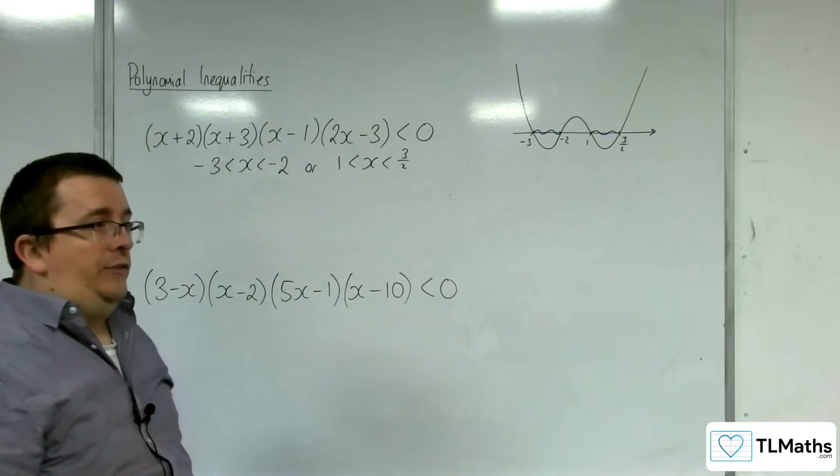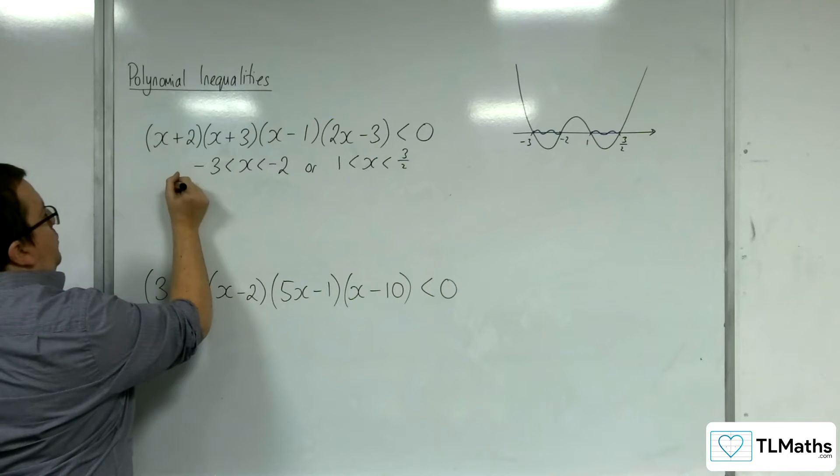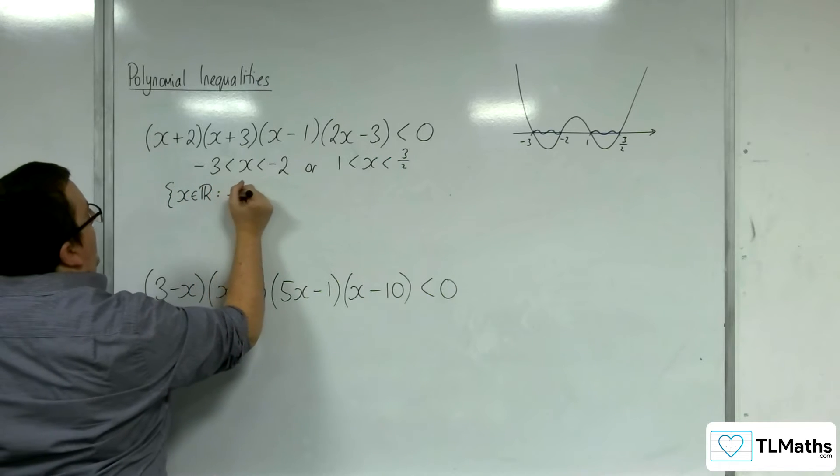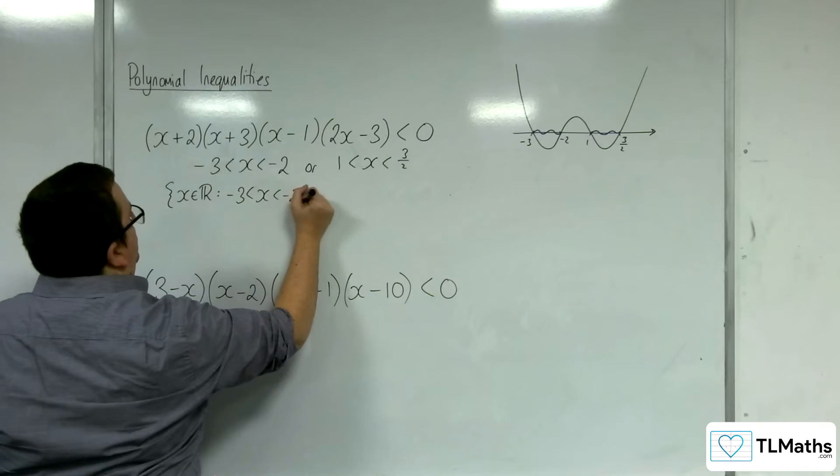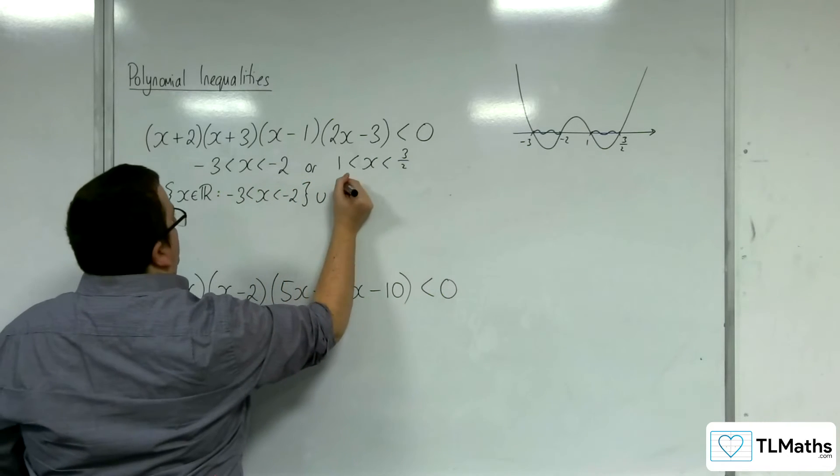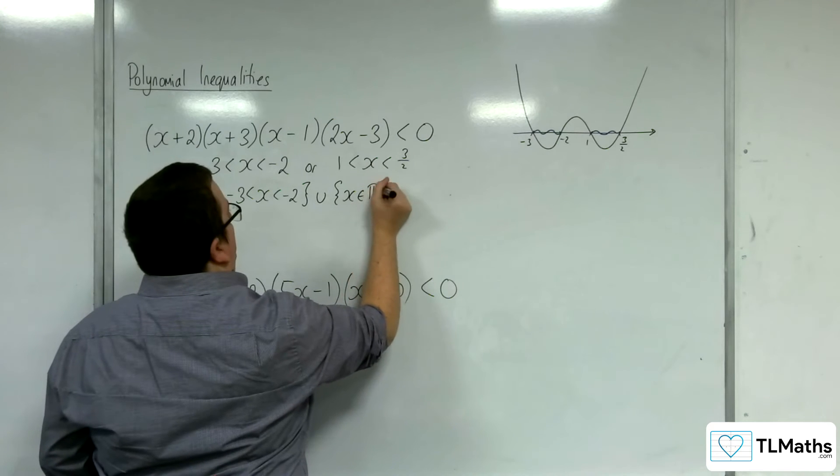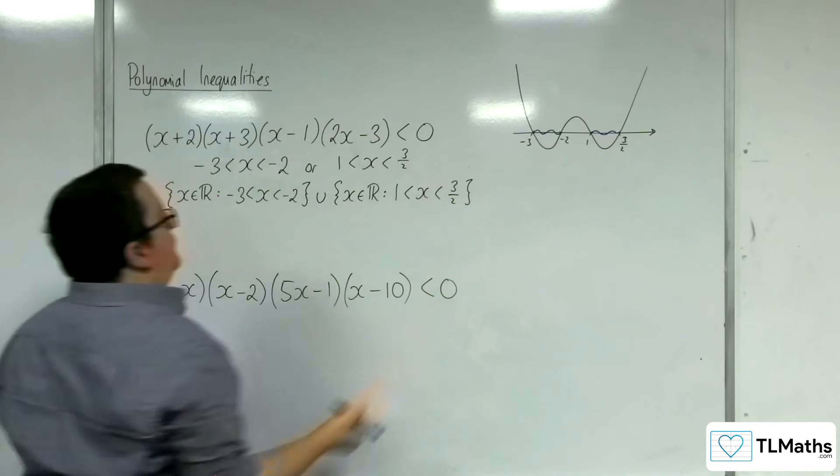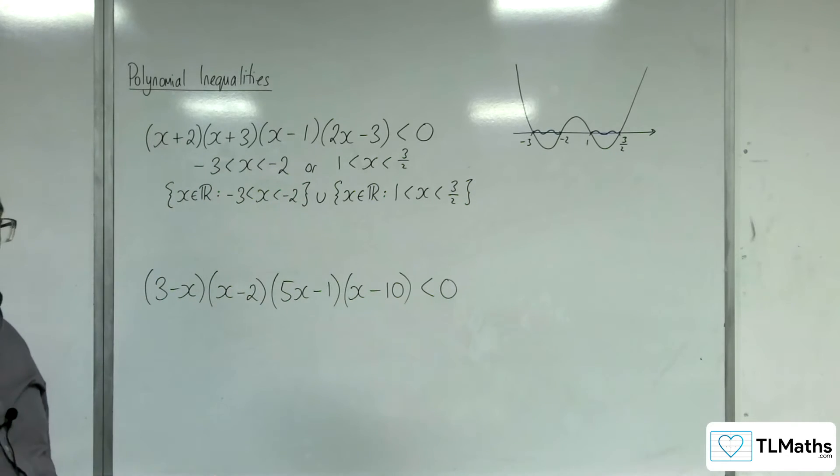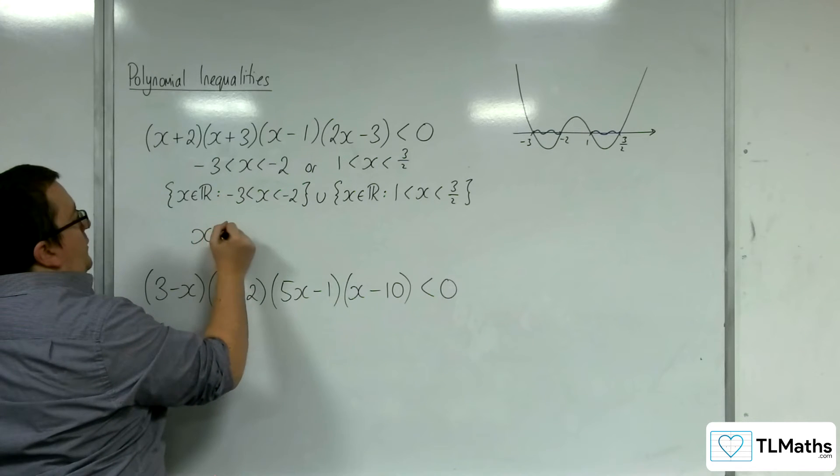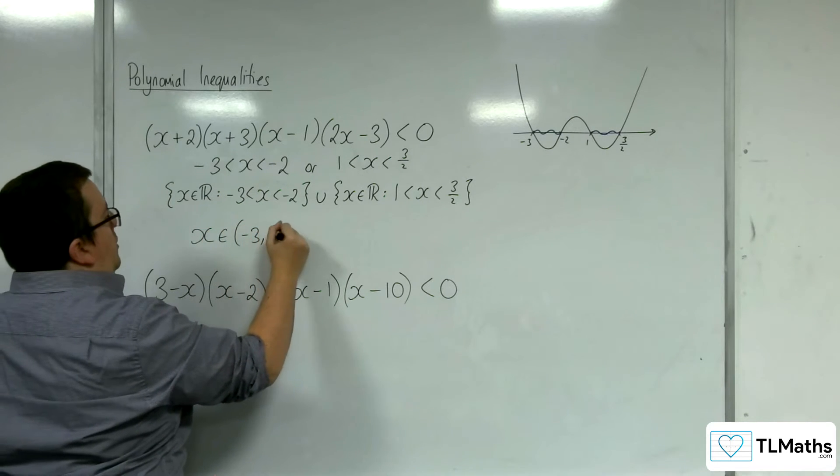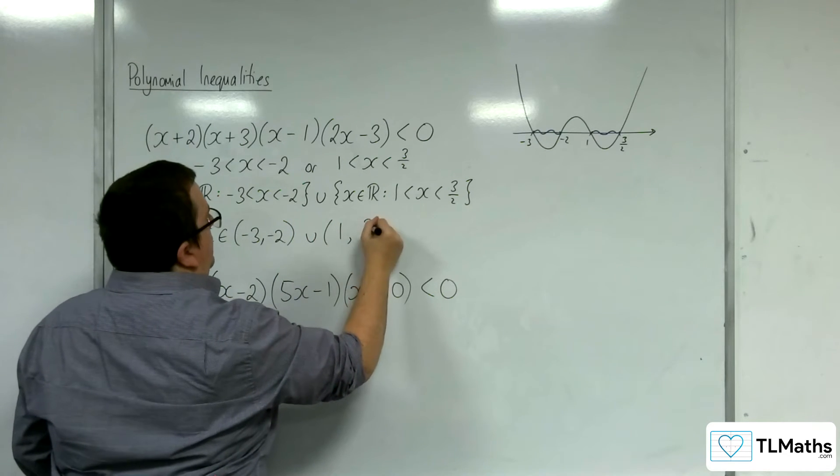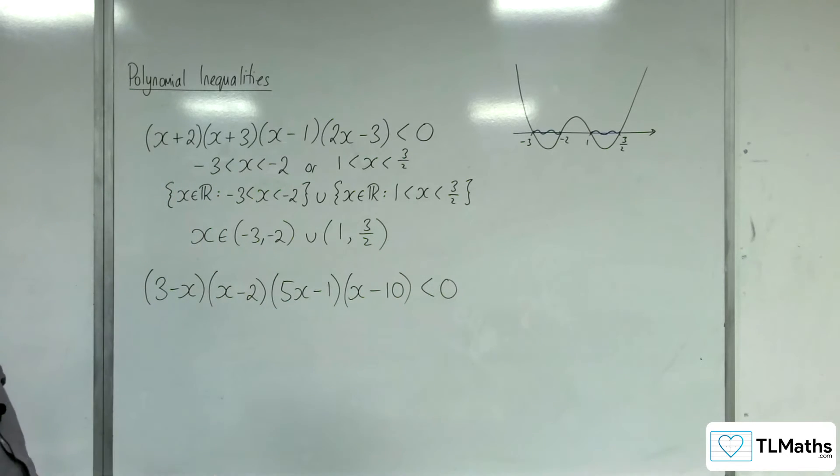Now you might be asked to write that in set notation, in which case we would be saying x belongs to the real numbers such that x is greater than minus 3 but less than minus 2. So in interval notation, we would be saying x belongs to minus 3, minus 2, so it's in that region, or it's in this region here.